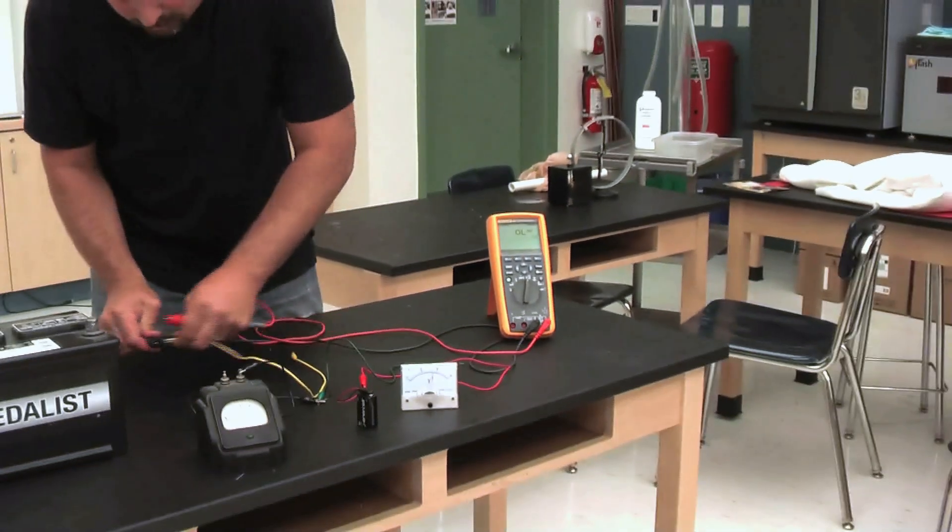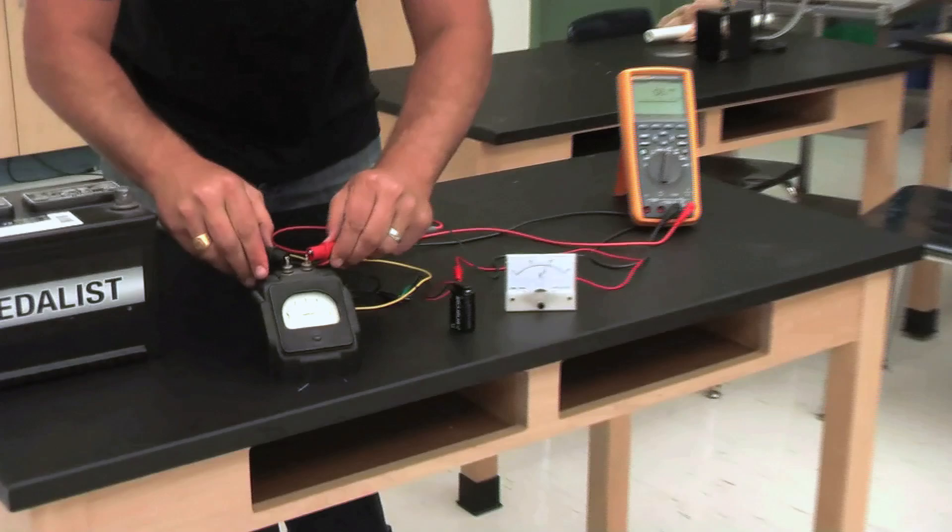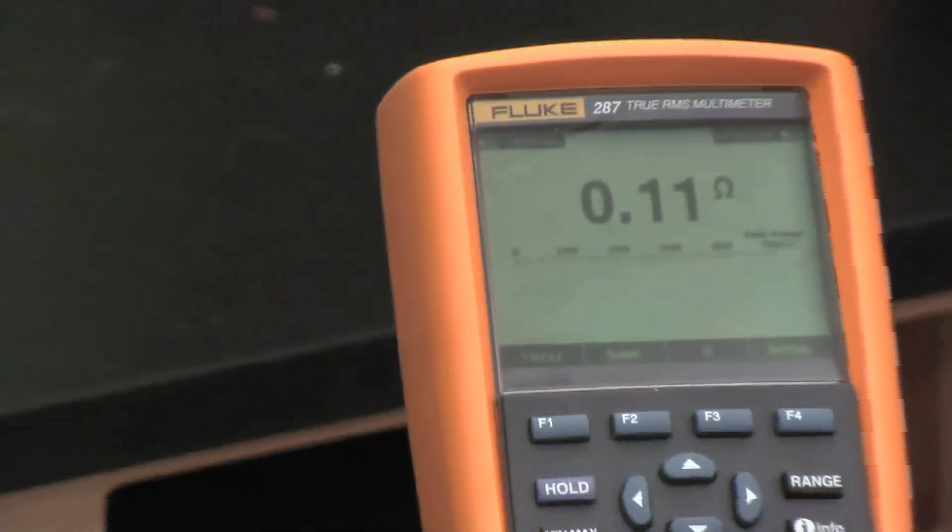You might say, well, maybe it's the current meter. Well, we can check that too. 0.12 ohms.